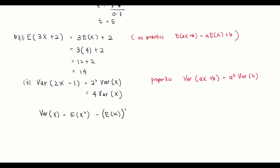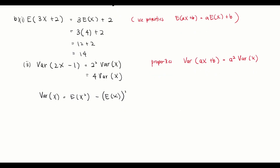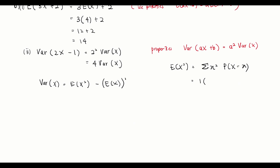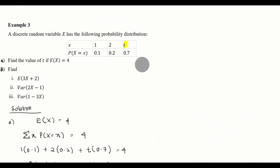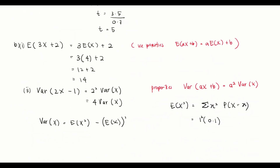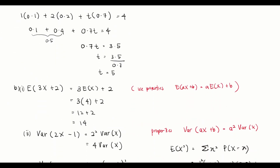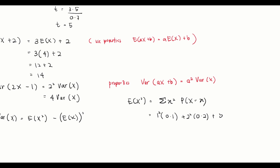The formula for Var(X) = E(X²) − [E(X)]². We need to find E(X²), which is the summation of x² times its probability. From the table: 1² × 0.1 plus 2² × 0.2, and for the third value, t = 5, so 5² × 0.7.